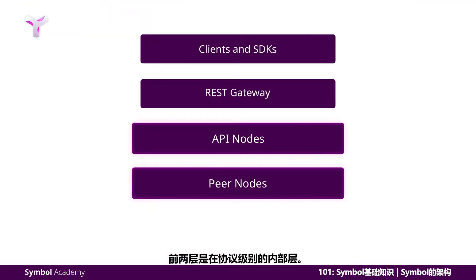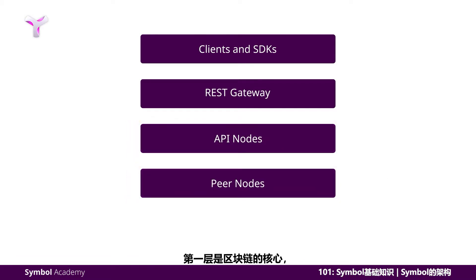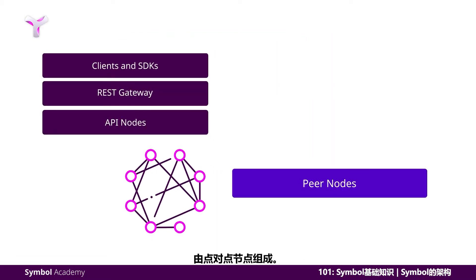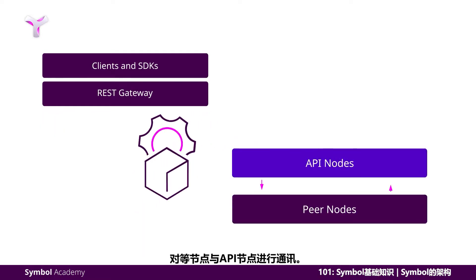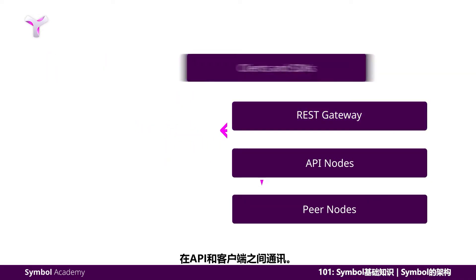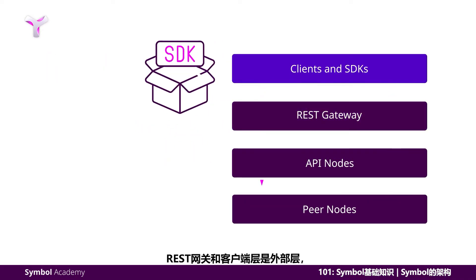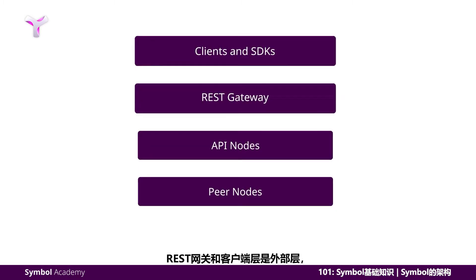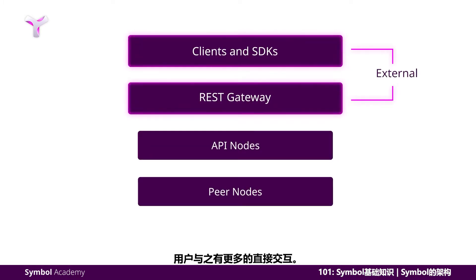The first two tiers are internal tiers that are at the protocol level. The first tier is the core of the blockchain, made up of peer nodes. The peer nodes communicate with API nodes. The REST Gateway is the next tier, which communicates between the API and the clients. The REST Gateway and the client tiers are external tiers that users have more direct interactions with.